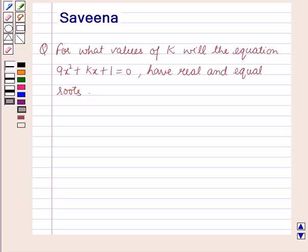Before starting the solution of this question we should know a result. The standard form of quadratic equation is ax square plus bx plus c equals 0, where a is not equal to 0 and a, b, c are the constants.